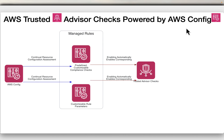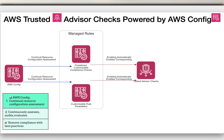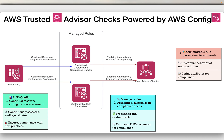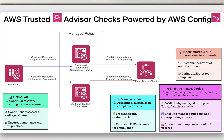Another feature is AWS Trusted Advisor checks powered by AWS Config. Trusted Advisor is integrated with AWS Config rules. AWS Config is a service that continuously assesses, audits, and evaluates your resource configurations against your desired settings, ensuring compliance with best practices. AWS Config provides managed rules — predefined and customizable compliance checks — that evaluate whether your AWS resources comply with common best practices. You can customize the behavior of a managed rule to suit your specific requirements. When you enable certain managed rules, the corresponding Trusted Advisor checks are automatically enabled, streamlining the compliance monitoring process.